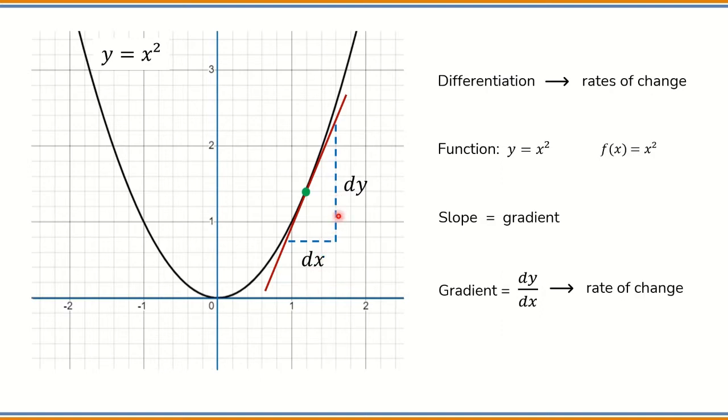When the slope is steeper, the rate of change is faster. I'm going to choose another point on the curve with a less steep slope. In this case, dy over dx have a smaller value than in the other example, and this means that the rate of change is lower than in the first point selected.